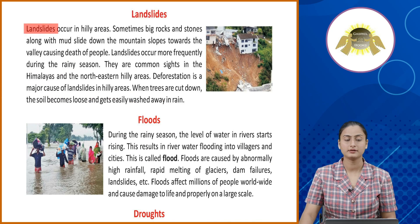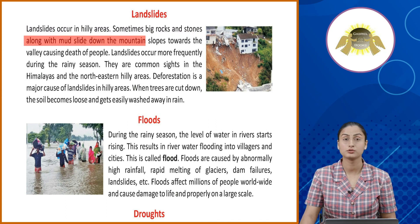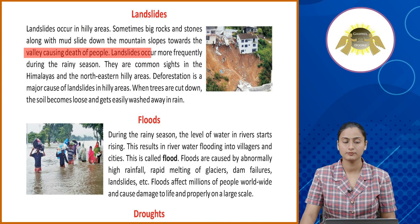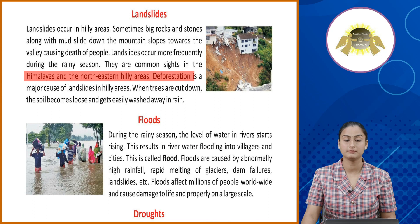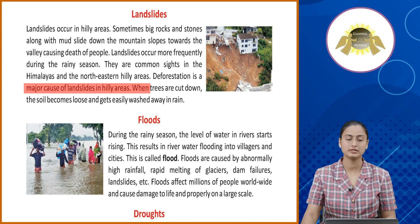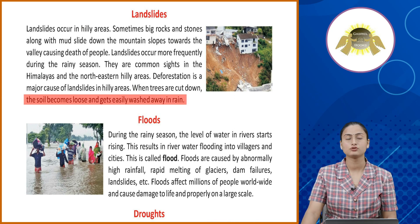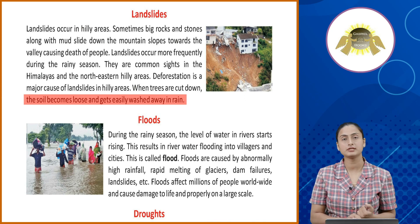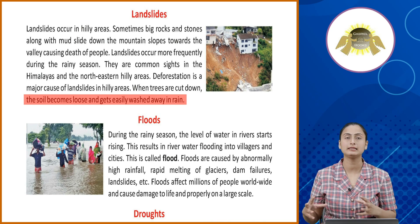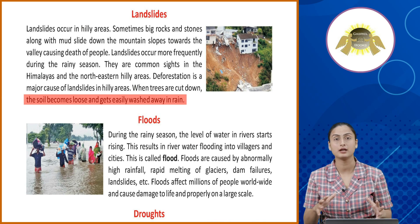Landslides occur in hilly areas. Sometimes big rocks and stones along with mud slide down the mountain slopes towards the valley, causing death of people. Landslides occur more frequently during the rainy season. They are common in the Himalayas and the northeastern hilly areas. Deforestation is a major cause of landslides in hilly areas — when trees are cut down, the soil becomes loose and gets easily washed away in rain. Deforestation ki wajah se hoti hai — jab aap paidon ko nikaal dete hai, us side ki jo soil hoti hai wo loose ho jaati hai, jis ki wajah se bade-bade jo patthar hote hai wo girna shuru ho jate hai.